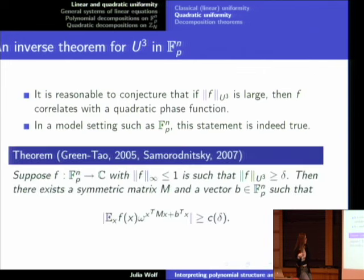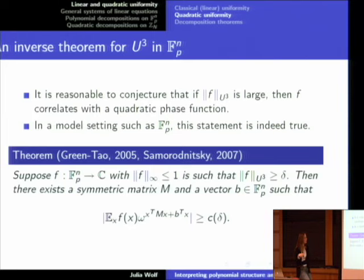The inverse theorem says precisely what you would suspect: if you have a bounded function with large U3 norm, then it correlates with a quadratic phase, expressed in terms of a symmetric matrix plus a linear term. The correlation is a function of the largeness of the U3 norm you had at the start. An important open question is whether you can improve this correlation — in this version, the correlation is exponential in delta, which is a bit too small; we hope to get something polynomial. This was proved by Green and Tao for p greater than 2, and Samorodnitsky for p equals 2. There's a certain part of the proof that you cannot do in characteristic 2, namely the symmetry argument — at some point you end up multiplying by 2, and that's not great in F2.